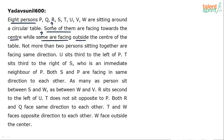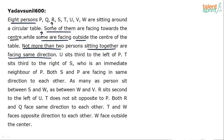One key clue is: not more than 2 persons sitting together are facing the same direction. This means maximum 2 immediate neighbors can both face center or both face outwards. We cannot have 3 consecutive persons or more than 3 consecutive persons facing the same direction. That's the critical constraint to keep in mind.